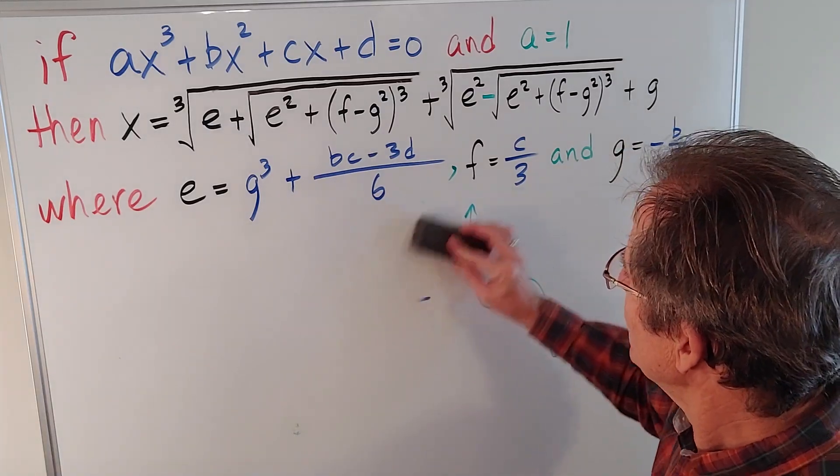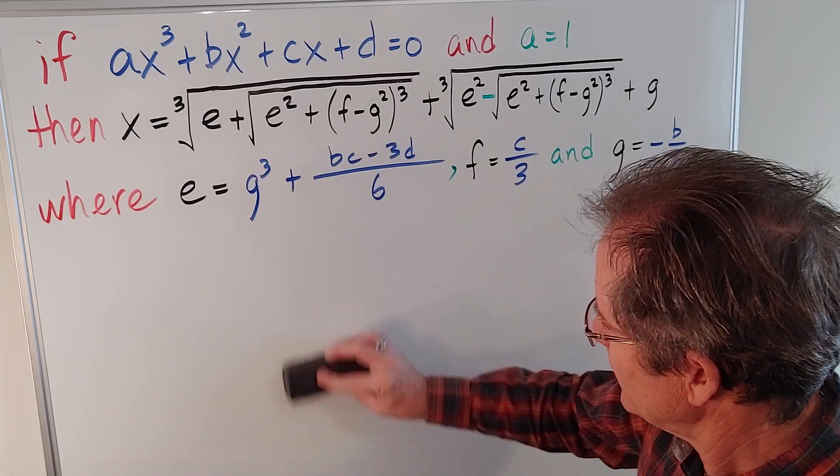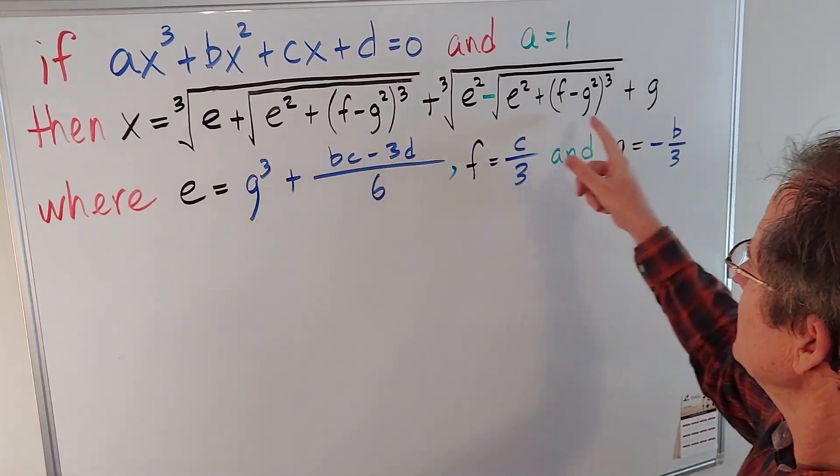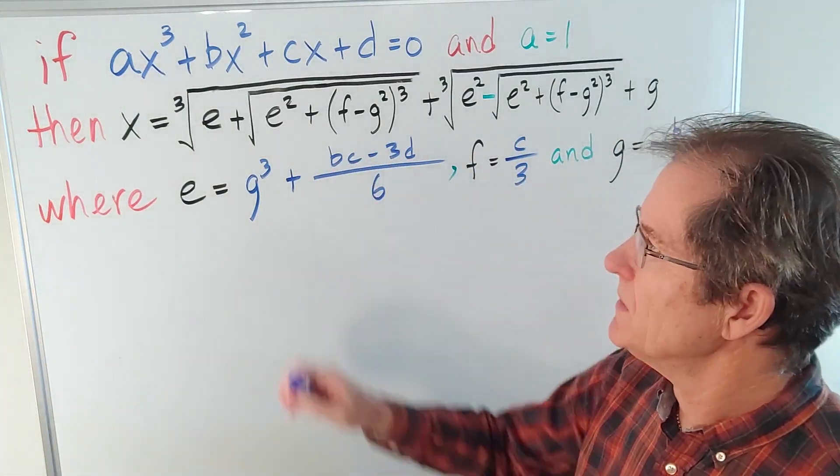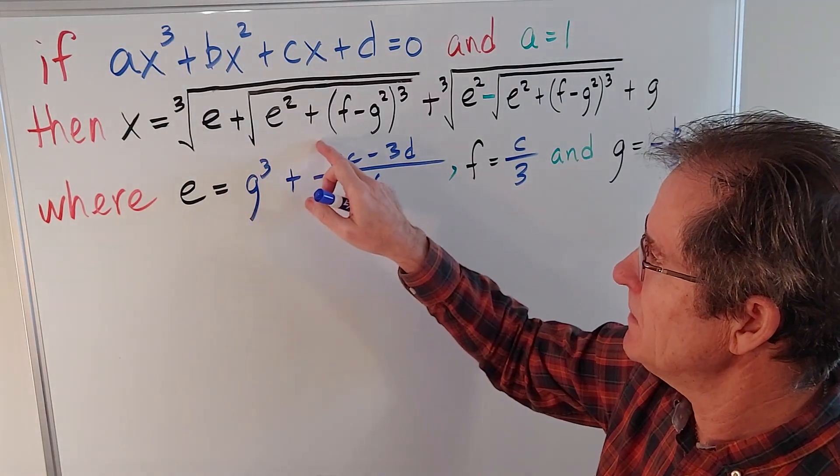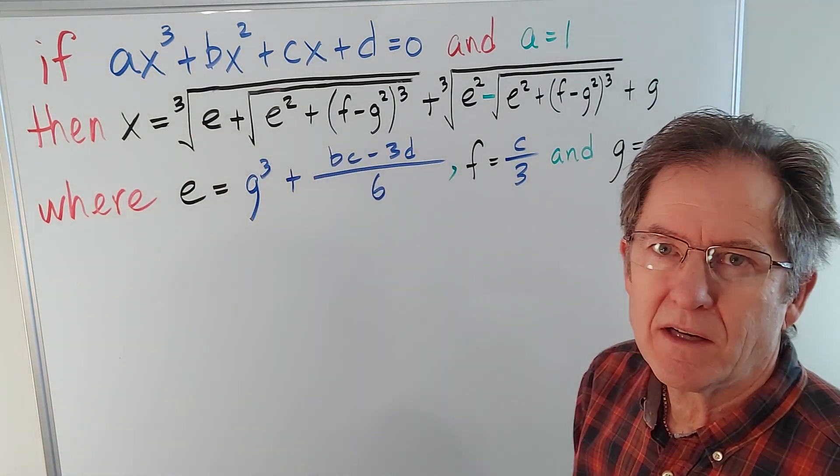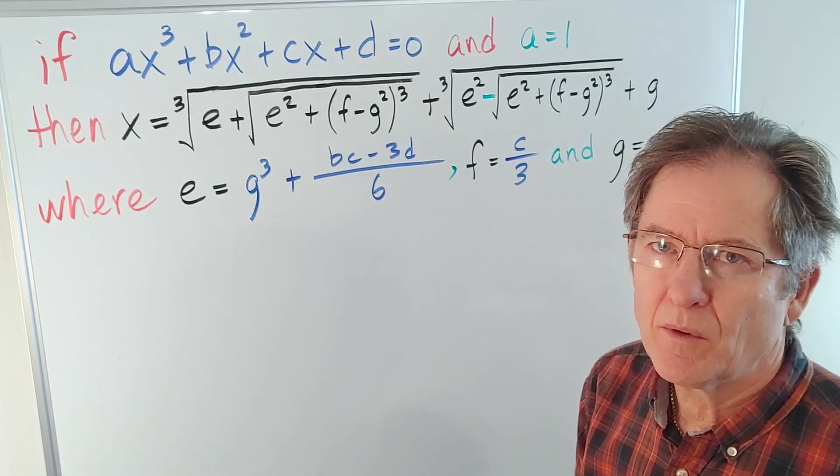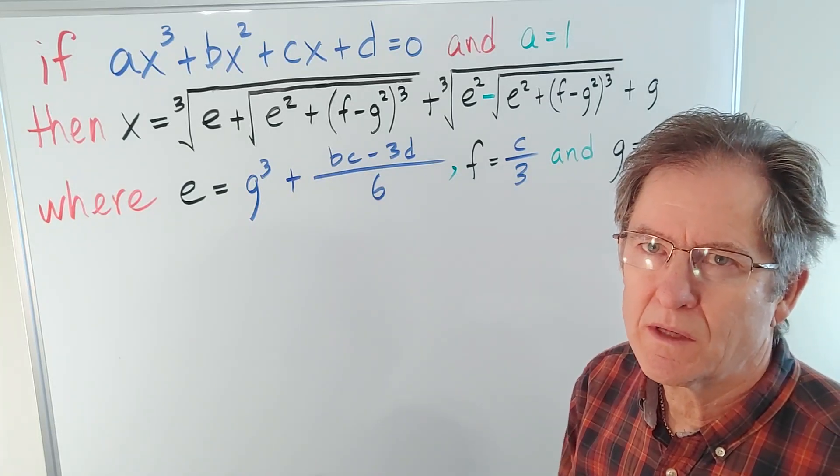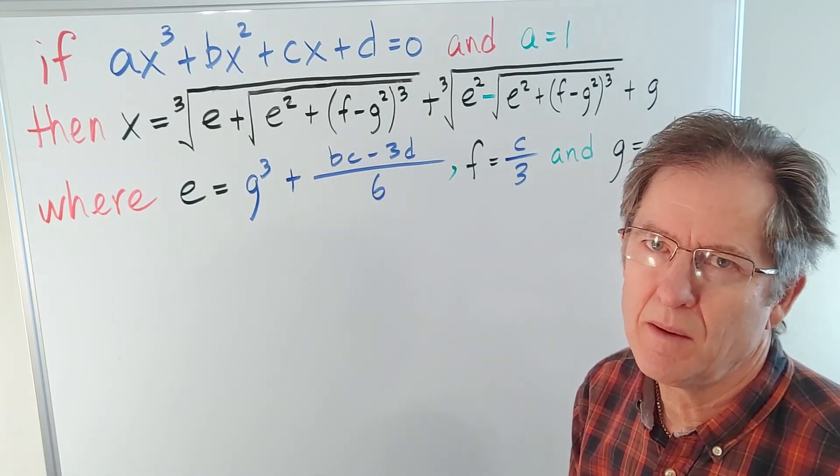Well, the reason we get more than one answer from this formula, which looks like it only gives one answer, is because when you take the cubed root of numbers, especially or including imaginary numbers, you get more than one solution. I won't go into the details of that in this lesson, maybe in another lesson.